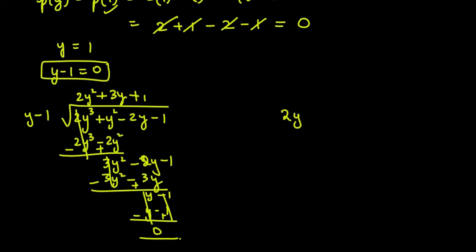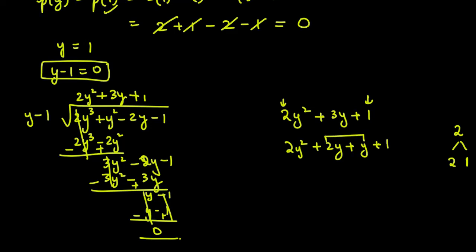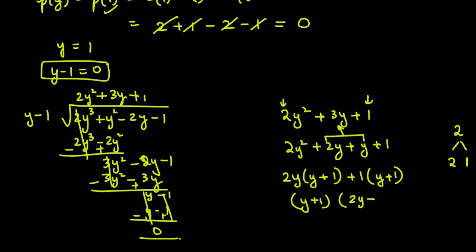The new quadratic polynomial is 2y square plus 3y plus 1. We do middle term splitting: 2 × 1 = 2. Factors of 2 that add to 3 are 2 and 1. So we write 2y square plus 2y plus y plus 1. From the first two terms take 2y common: 2y(y + 1). From the last two terms take 1 common: 1(y + 1). So the two factors are (y + 1) and (2y + 1).